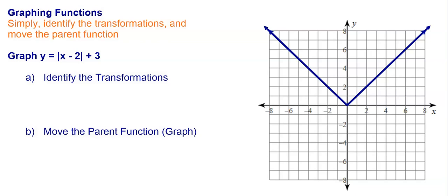All you have to do first is identify the transformations. I have minus 2 on the inside, and a minus 2 on the inside means right 2. And then I have a plus 3 on the outside, and a plus 3 on the outside means up 3. So my transformations of the parent function are right 2 and up 3.